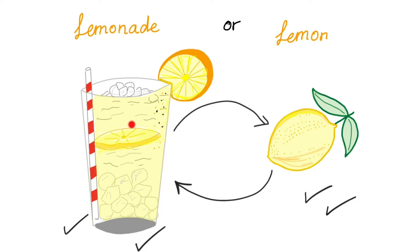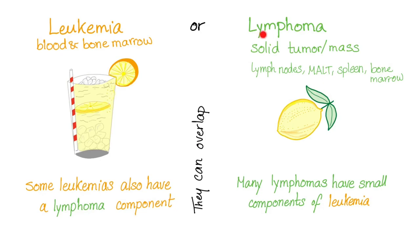They will be in the bone marrow and in the bloodstream. Leukemia is liquid, lymphoma is solid, roughly speaking. Lymphoma is a solid tumor or solid mass in the lymph node or the mucosa-associated lymphoid tissue, spleen, or bone marrow. Leukemia is in the blood. Where does the blood come from? From the bone marrow.